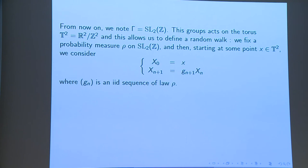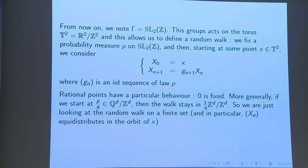So if you look at this, you see, first thing, that 0 is fixed by this random walk. So if I start at 0, I don't move. And moreover, if I start at any rational point, I will have a finite orbit. Since I will stay in, if I start at p over q, I will stay in 1 over q times Z^d over Z^d. And in particular, it's a general thing about random walk on a finite set, that if I start at an irrational point, I will equidistribute in its orbit.